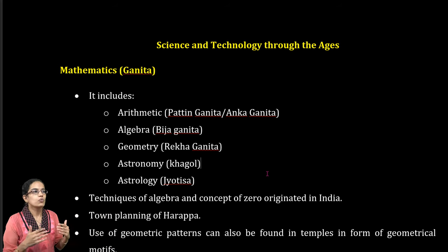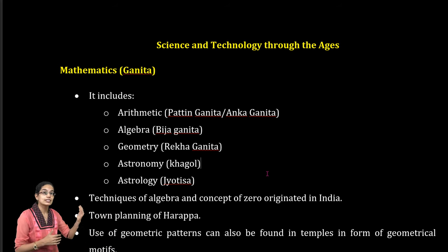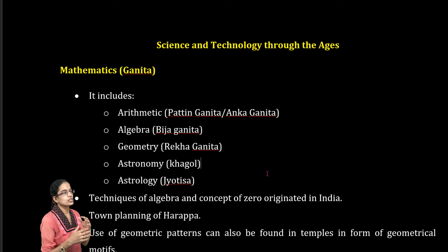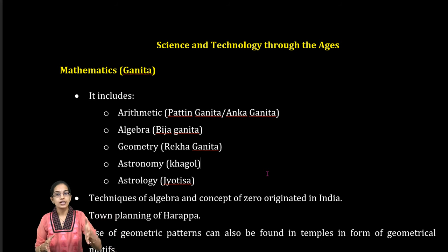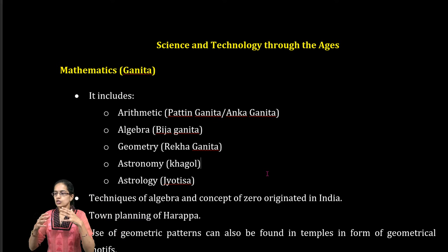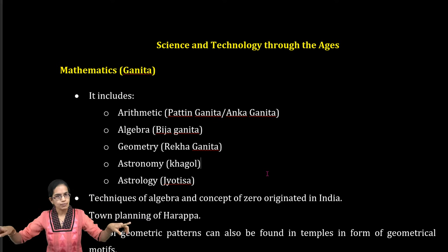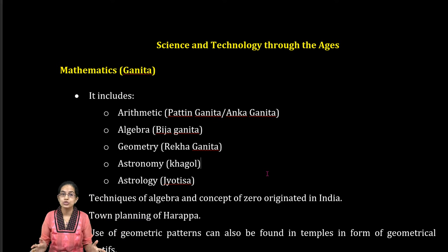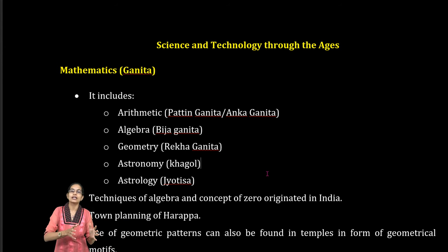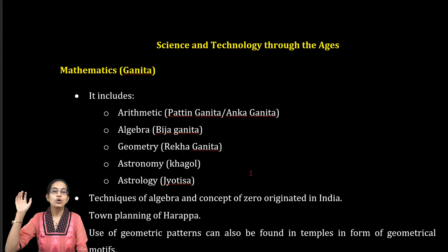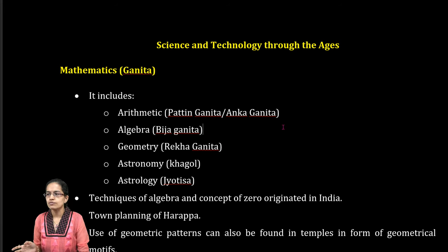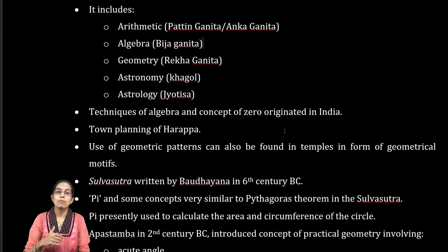In India, since the time of the Harappan civilization, the concepts of Rekha Ganith had been used for town planning. The roads were cut at right angles, and you had geometric patterns that were used for house designing. Similar kinds of developments were also seen in the Egyptian civilizations, showing that development of mathematics and science occurred across civilizations.